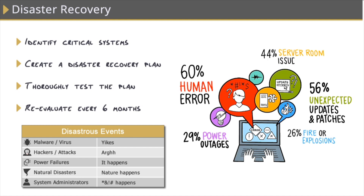And a fun fact — did you know about 75% of organizations experience an outage every year? And only 13% of those are weather or natural disaster related. And believe it or not, most of these disasters are caused by users. And as sysadmins, we fall into that category by oftentimes pushing the wrong button, running the wrong process, or deleting the wrong thing.